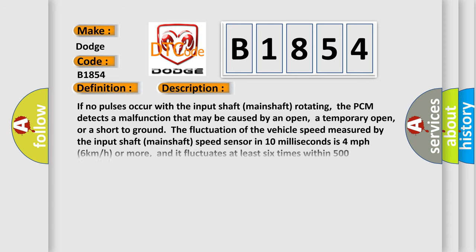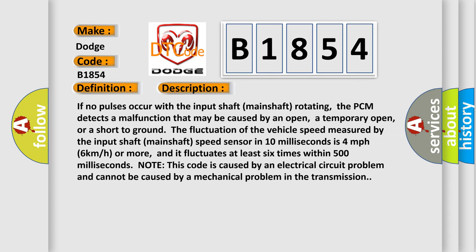And now this is a short description of this DTC code. If no pulses occur with the input shaft (mainshaft) rotating, the PCM detects a malfunction that may be caused by an open, a temporary open, or a short to ground. The fluctuation of the vehicle speed measured by the input shaft mainshaft speed sensor in 10 milliseconds is 4 miles per hour (6 kilometers per hour) or more, and it fluctuates at least six times within 500 milliseconds. Note: This code is caused by an electrical circuit problem and cannot be caused by a mechanical problem in the transmission.